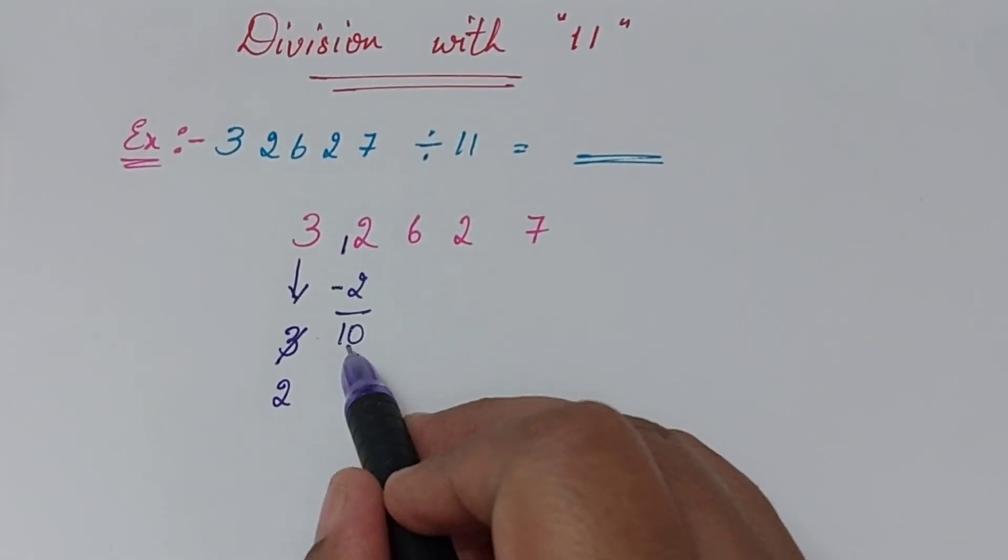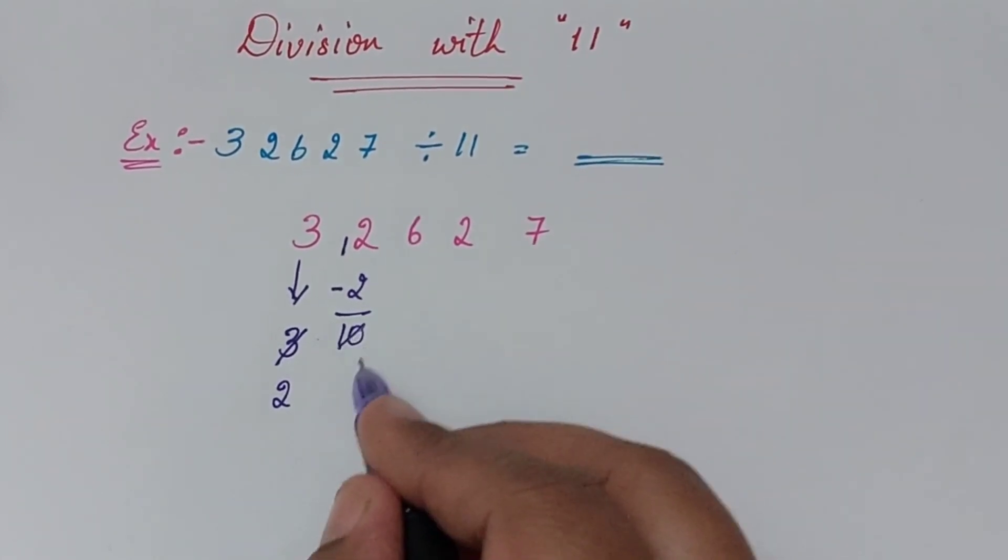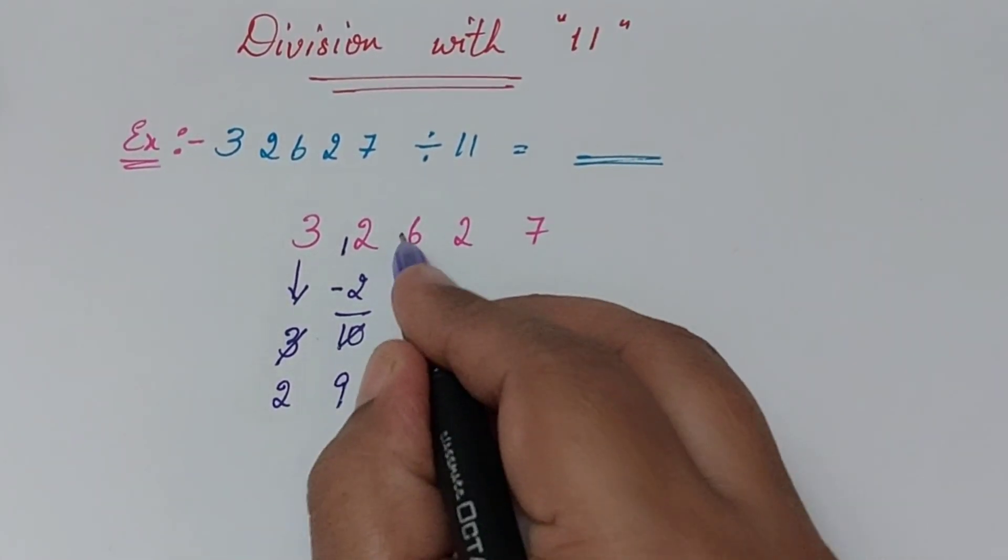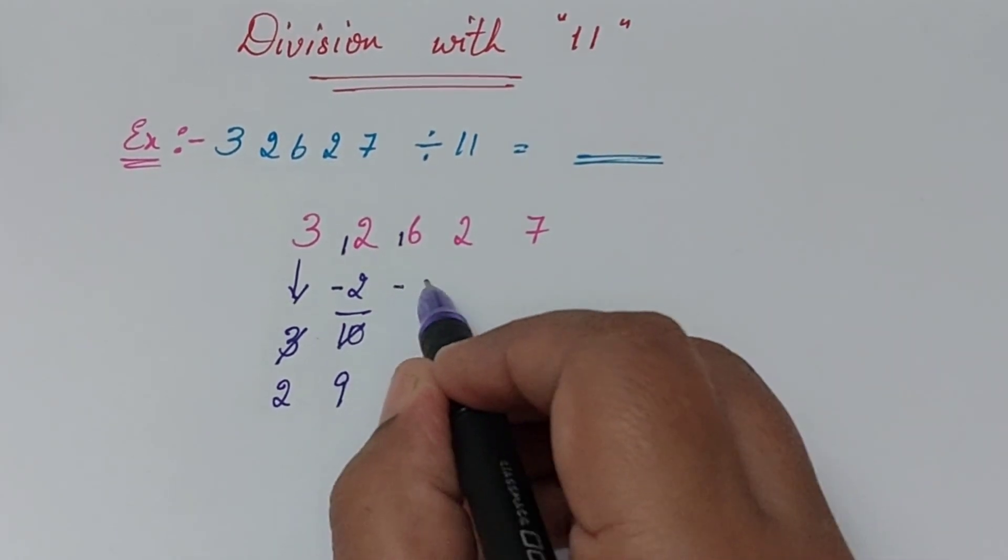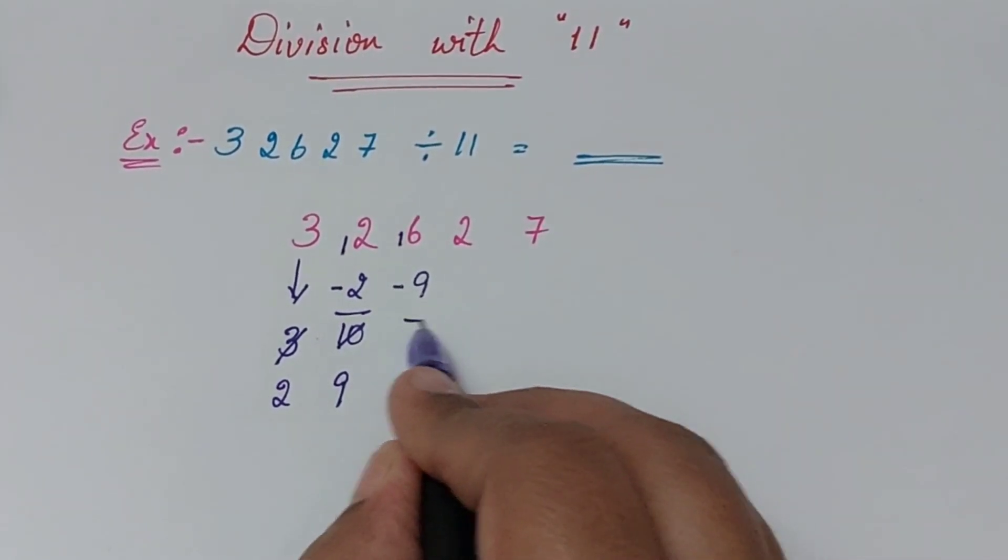Can we do 6 minus 10? No. Reduce this to 9 and this will be 16 here. So 16 minus 9, can we do? Of course we can do. So that is 7.